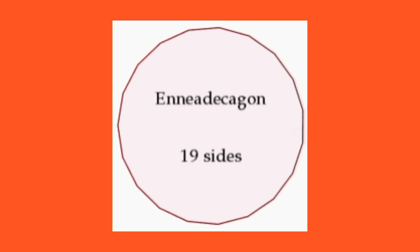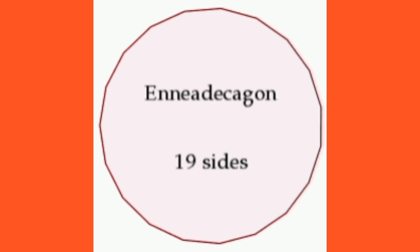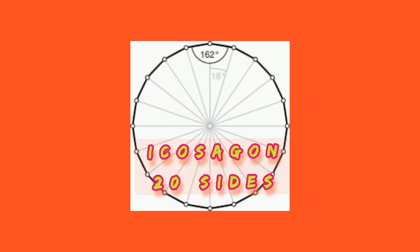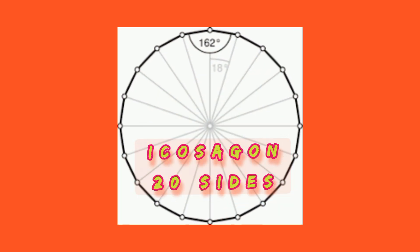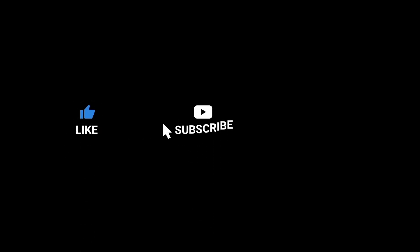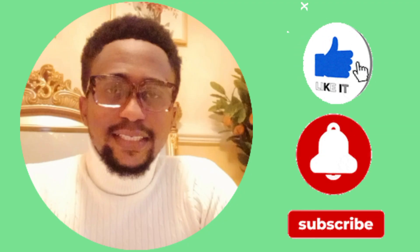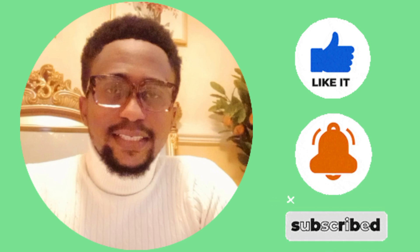Enneadecagon — these are shapes with 19 sides. Icosagon — these are shapes with 20 sides. Thanks for watching. For more educational videos like this, kindly subscribe to our YouTube channel, like and share, and don't forget to turn on the notification bell.